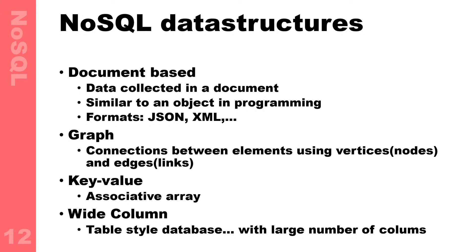The one we are going to use is document-based — data collected in a document. Just like a table and a row, we have one document per row: one document for one user, one document for one address, etc. Think of a document as an object of a class — you have the class user which has all the definitions, and each time you need a new user you make a new object. The same logic exists for persistent databases. The format we're going to use is JSON, not XML.